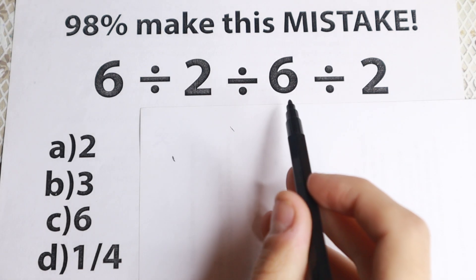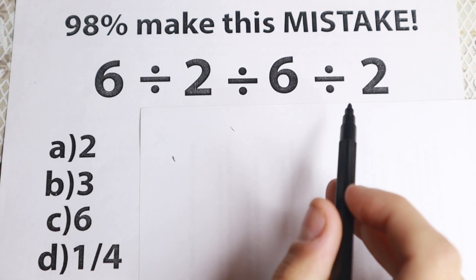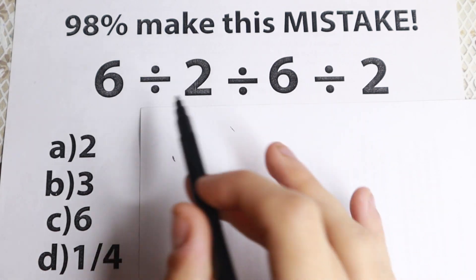We have 6 divided by 2, divided by 6, divided by 2. No huge numbers, no squares, parentheses right here, only division.